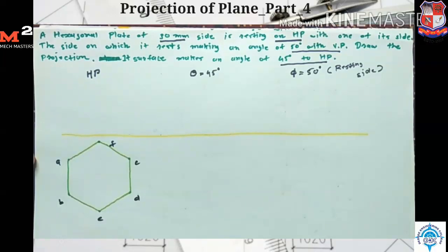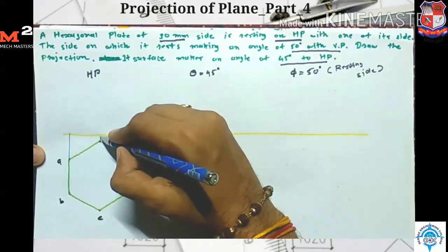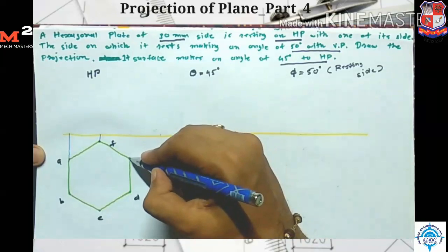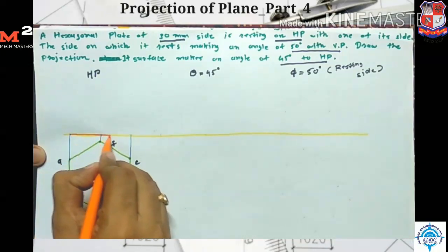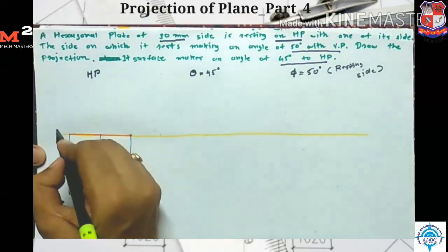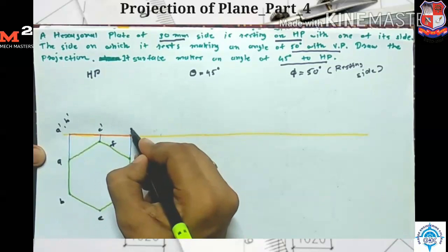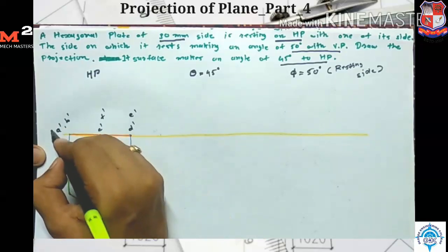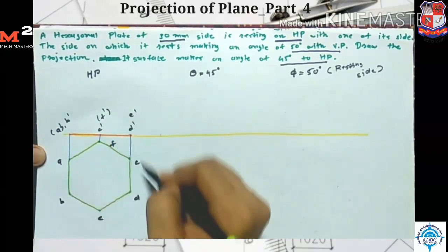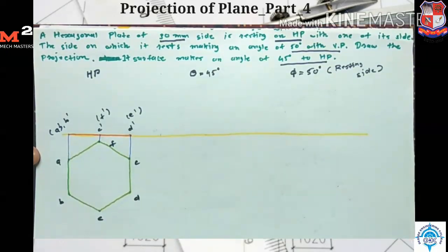Now drawing the front view, I just simply take the projection. This projection is for A and B points, this projection for C and F points, and this projection for D and E points. So here I get my front view. I give the names: A dash, B dash, C dash, D dash, E dash, and F dash. Here A dash, F dash, and E dash points are hidden points, so I indicate these points in brackets. So our first stage is complete.